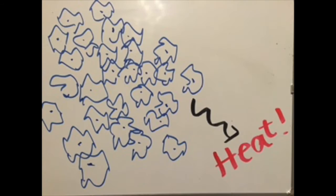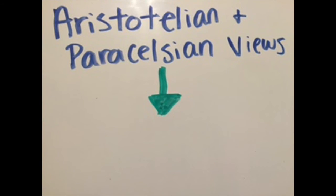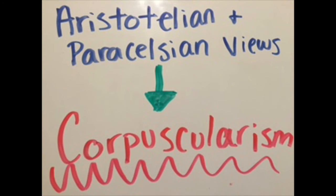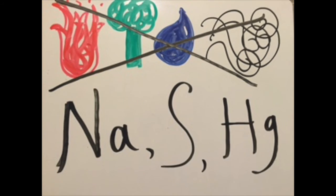Boyle also found what caused heat, the movement of particles. Boyle was a fan of corpuscularism, a form of atomism that was replacing Aristotelian and Paracelsian views of the world. This idea replaced the four past elements, fire, earth, water, and air, with three new ones, salt, sulfur, and mercury.